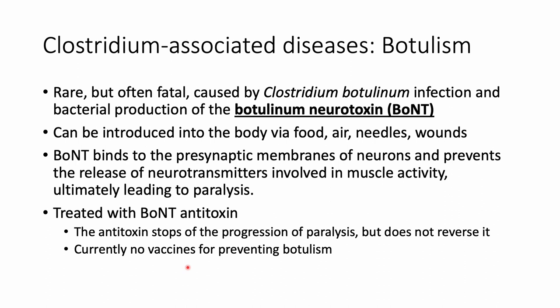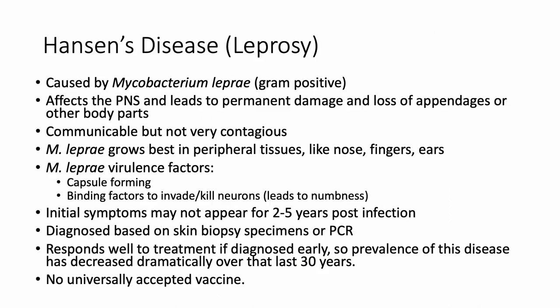There is currently no vaccine to prevent botulism, unlike tetanus which has the tetanus toxoid vaccine. The last bacterial infection of the nervous system covered is Hansen's disease, or leprosy, caused by Mycobacterium leprae, a gram-positive bacterium. This bacteria affects the peripheral nervous system and can lead to permanent nerve damage, loss of sensation, or potential loss of appendages.